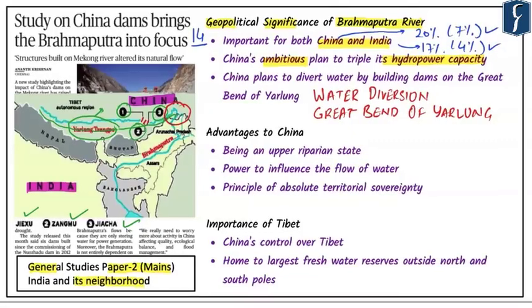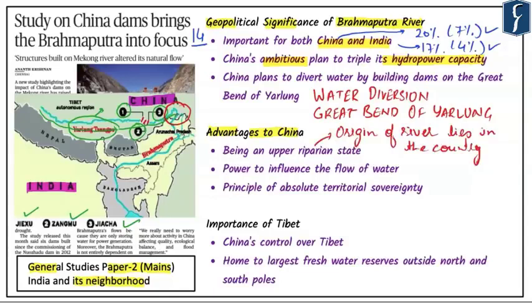It is important to understand what advantage China enjoys as an upper riparian state. An upper riparian country is one where the upper course or origin of a river lies. China is completely upper riparian, giving it unparalleled power to influence water flow to downstream nations. India functions as a middle riparian state, but acts as upper riparian relative to Pakistan and Bangladesh.